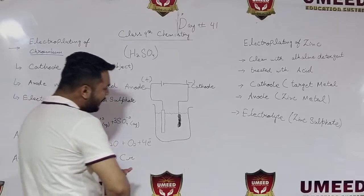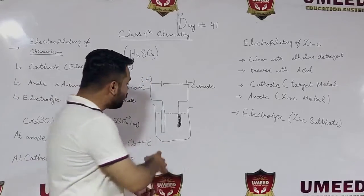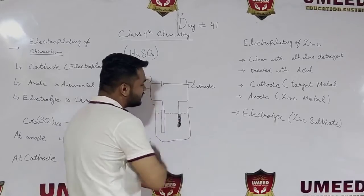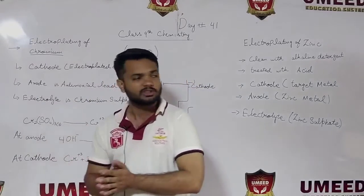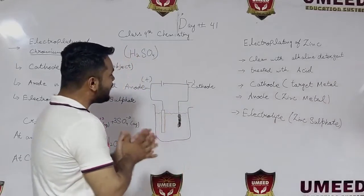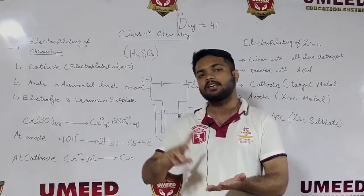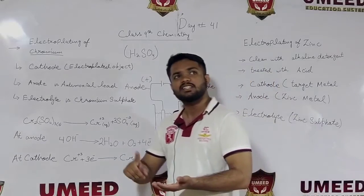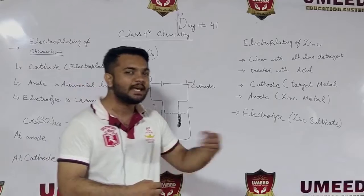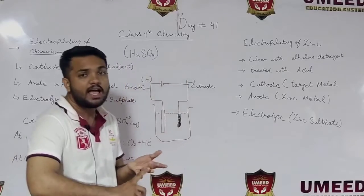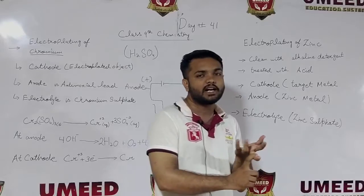Pure chromium is deposited onto the cathode surface through this process. This completes the whole electroplating of chromium process.